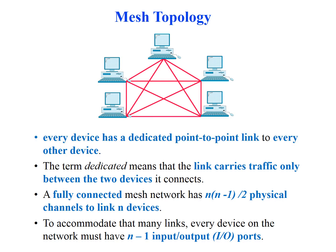The dedicated link carries data only between those two devices alone. In a fully connected mesh, we will have N×(N−1)/2 physical connections to connect N number of devices. To accommodate that many links, every device in a mesh network must have N−1 I/O ports, that is N−1 network ports.